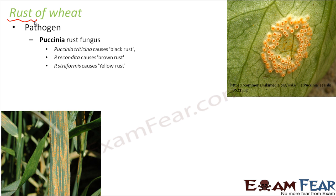The pathogen here is a fungus called Puccinia. There are different strains of Puccinia which cause different types of rust: Puccinia triticina causes black rust, Puccinia recondita causes brown rust, and Puccinia striiformis causes yellow rust.